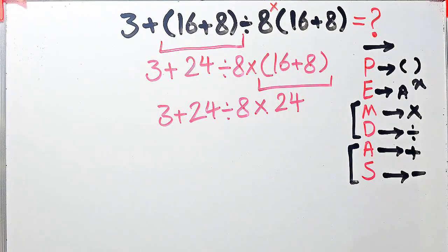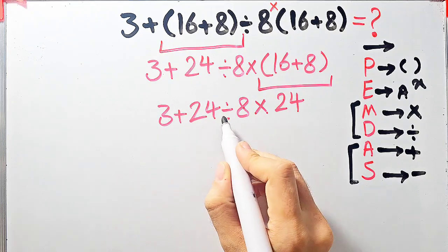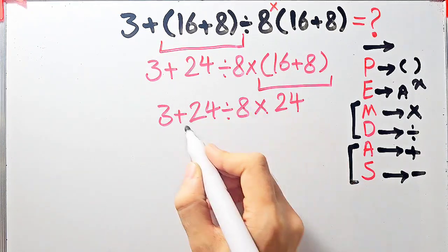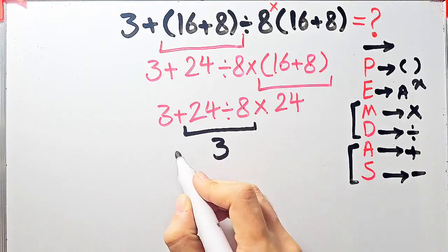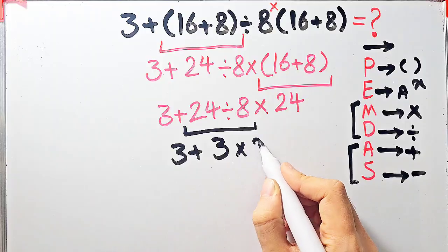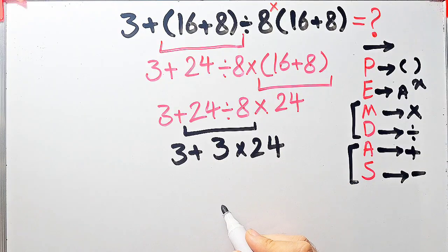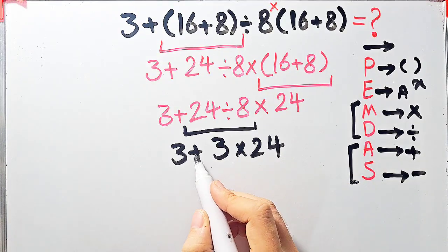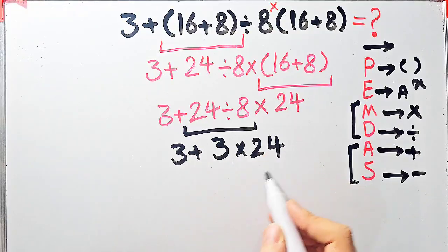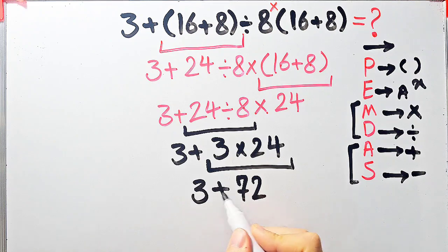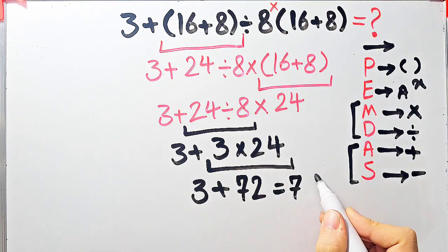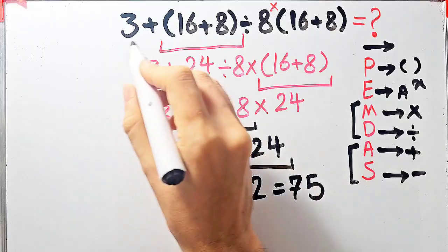Now we have addition, division, and multiplication. We simplify the division: 24 divided by 8 equals 3. Now the question is 3 plus 3, then times 24. Because multiplication has higher priority than addition, we do 3 times 24 equals 72. Now we have 3 plus 72. 3 plus 72 equals 75, and the final answer of this question equals 75.